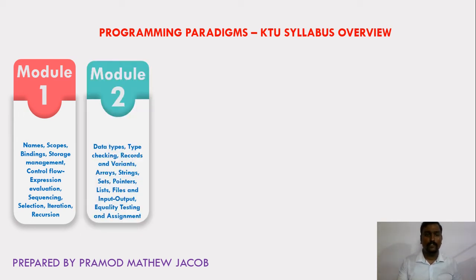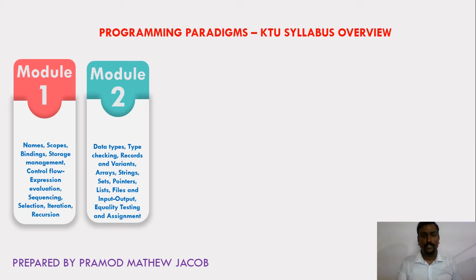In Module 2, we will learn about the standard data types available in various languages, such as arrays, strings, sets, pointers, lists, files, etc. We will also learn about how to perform type conversion, type checking, type coercion, equality testing, and how assignment operations are done in various languages.